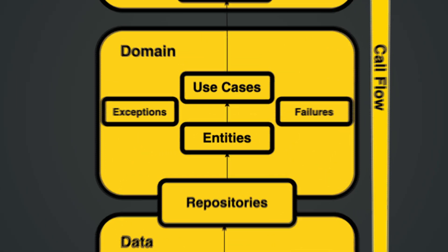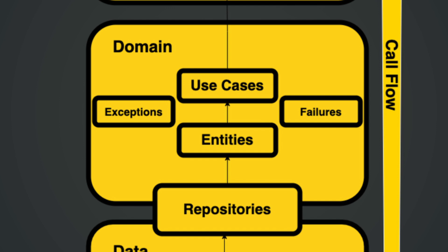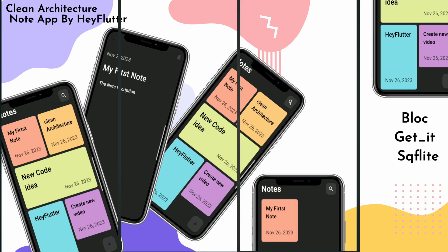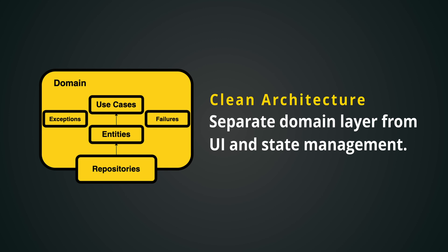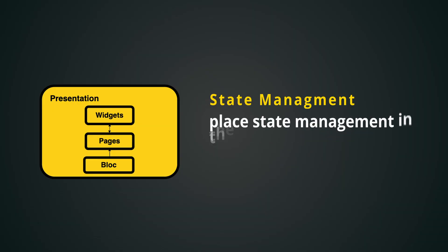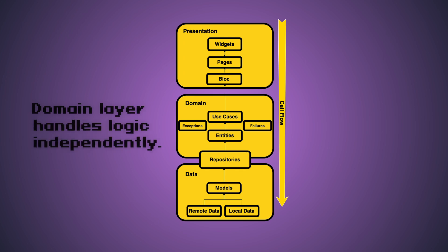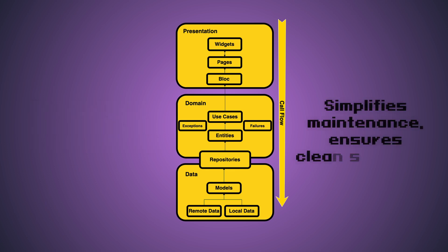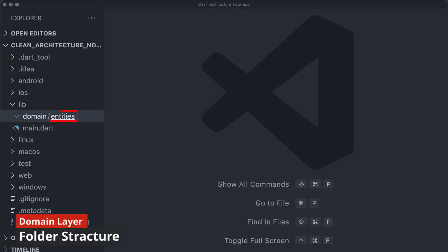When starting the creation of a new feature it is essential to begin from the core, which is the domain layer. We're about to develop a note-taking app utilizing the SQLite package for the database and the BLoC pattern for state management. Clean architecture dictates that the domain layer should remain free from implementation specifics like UI frameworks or state management libraries — it's all about focusing on business logic. The domain layer includes entities, repositories, use cases, and exceptions.